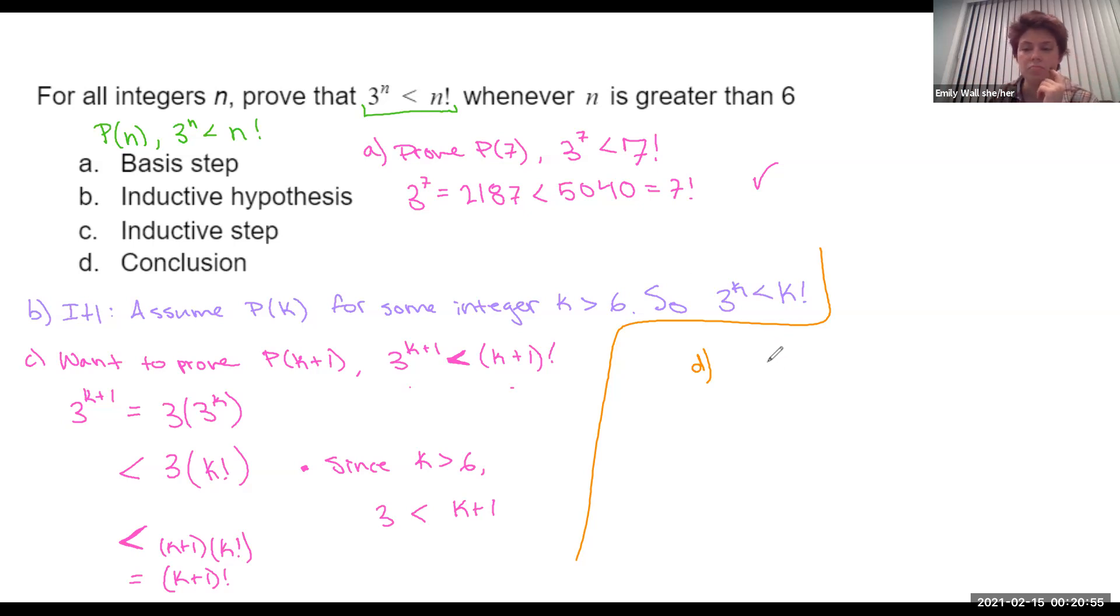So the conclusion is really just telling the reader of your proof what you did. And what did we do? We proved P(7) is true, and we proved that for all k greater than 6, P(k) implies P(k+1). So, by induction, what did we end up proving in total? We proved that for all n greater than 6, P(n). You could also write out P(n). If you very fully wanted to say this, we proved that for all n greater than 6, 3^n is less than n factorial. Which is good, because that's what they told us to prove. And now we're done. Finally.